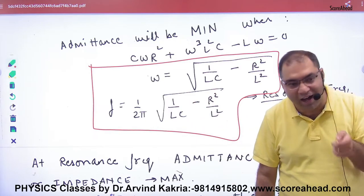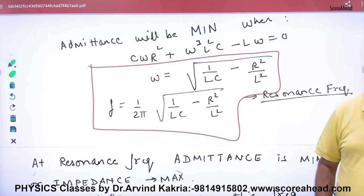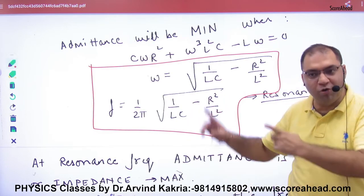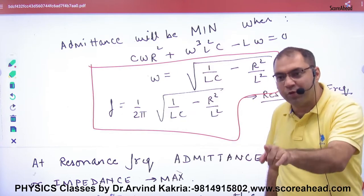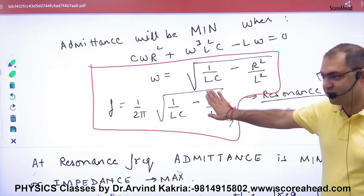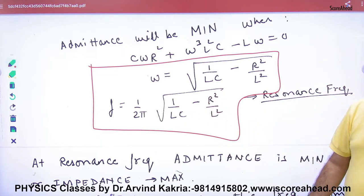Aur NCRT wale kya karte hai, R nahi lete hai, kyunki calculation badh hi ho jati hai. Competition wale R lete hai, calculation badh hi karte hai. Proof karna nahi hai. To resonance frequency LCR meh yeh rahegi, aur L or C meh parallel meh, R hat jayega, wahi purani aa jayegi. Rule wahi hai.